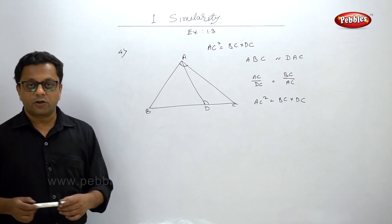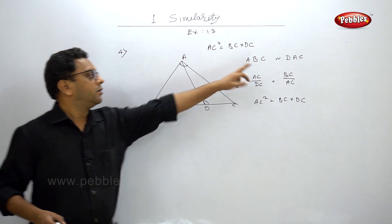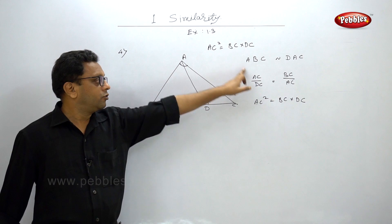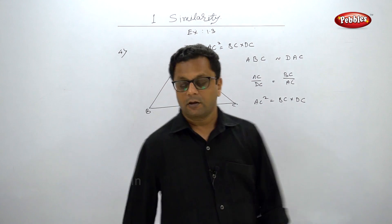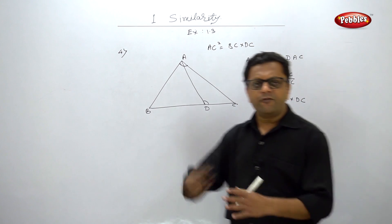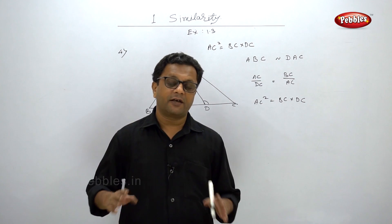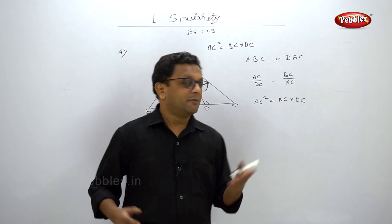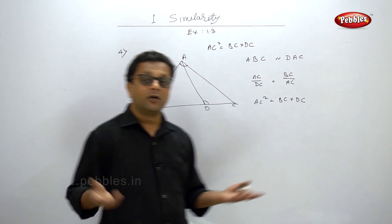The example is straightforward, but writing the names of the similar triangles correctly is the key. If you miss this, you will miss the answer. Practice by taking any figure from this chapter and trying to write the names of the similar triangles first. After that, the similarity chapter is just a calculation part.